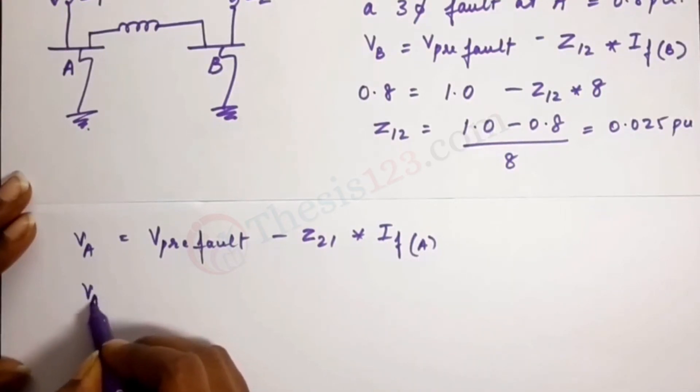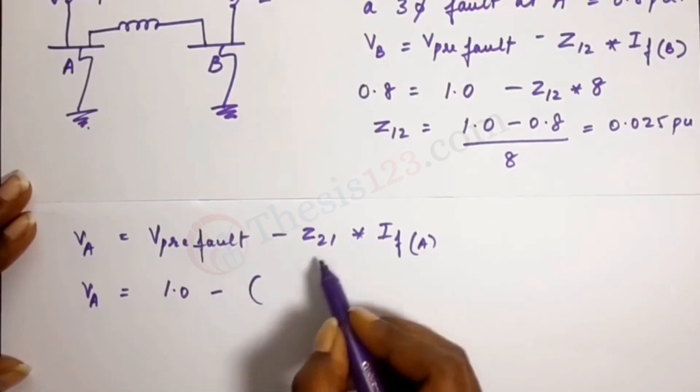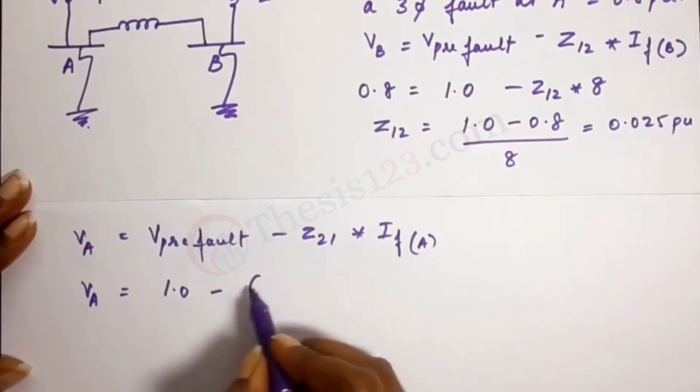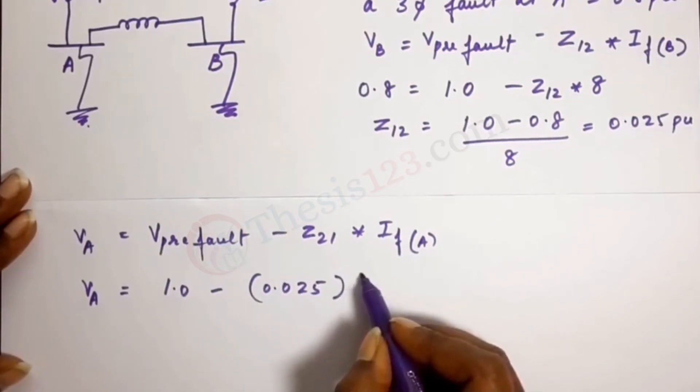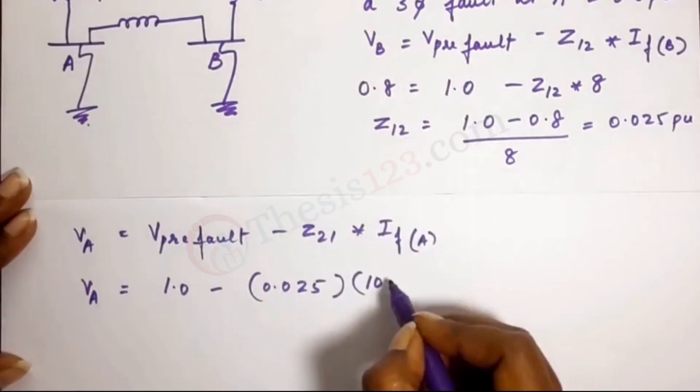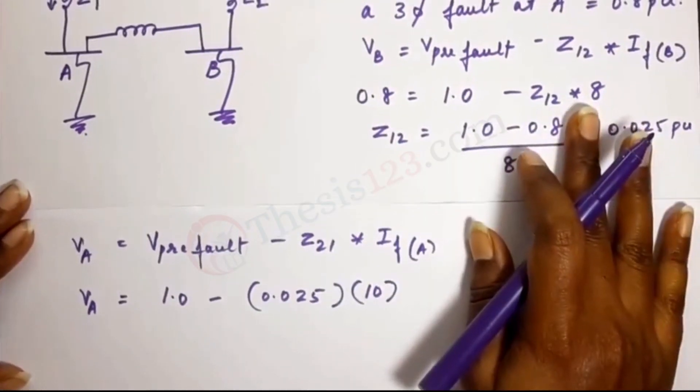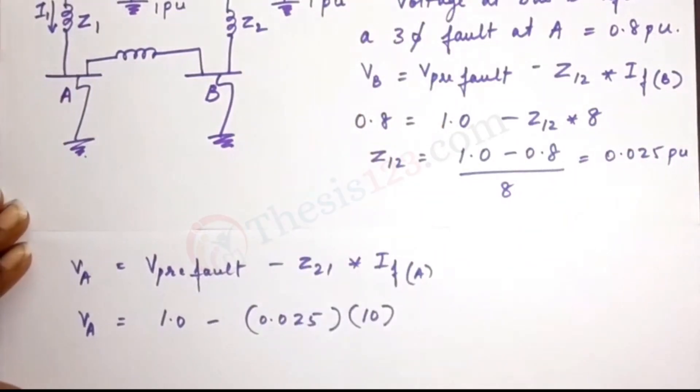So we need to find VA, right? So 1.0 minus, now we found this to be 0.025 times 10. 10 is what is given in the question, 10 PU.